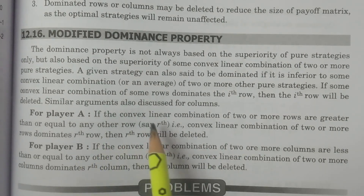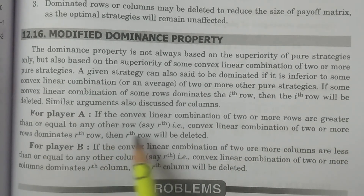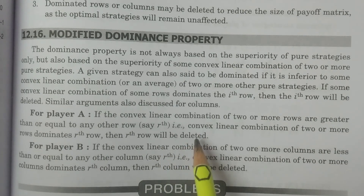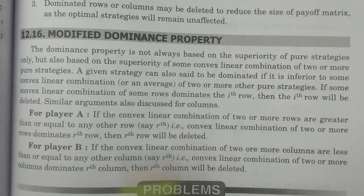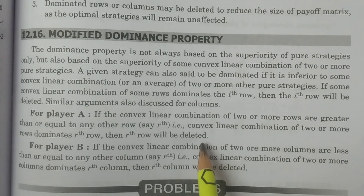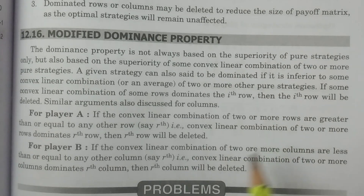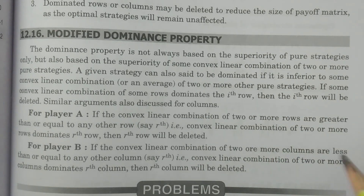For player A: if the convex linear combination of two or more rows is greater than or equal to any other row — say the r-th row — that is, the convex linear combination dominates the r-th row, then the r-th row will be deleted. The elements in the convex linear combination must be higher than the other row, so the other row having inferior elements will be deleted.